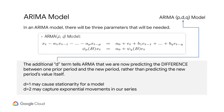In an ARIMA model, there will be three parameters that are needed. The P parameter indicates how many prior periods we are taking into consideration for explained auto-correlation. The Q parameter indicates how many prior time periods we are considering for observing sudden trend changes. The additional D parameter signifies the difference D, where we are predicting the difference between one prior period and the new period, rather than predicting the new period's value itself. This helps us detrend our data and approach stationarity.